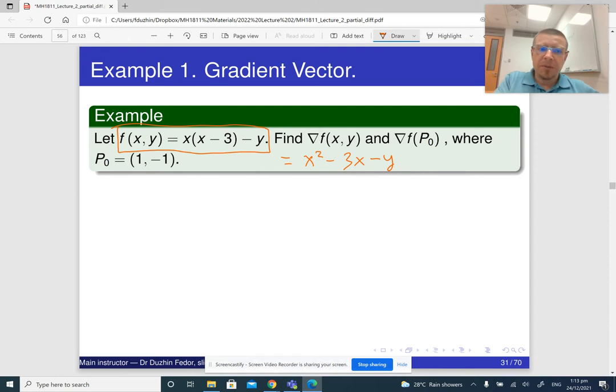The first step is to compute partial derivatives. fx, I am differentiating this expression with respect to x. The derivative of x squared is 2x. The derivative of negative 3x is negative 3. The partial derivative with respect to y: just negative y depends on y, so the partial derivative is negative 1.